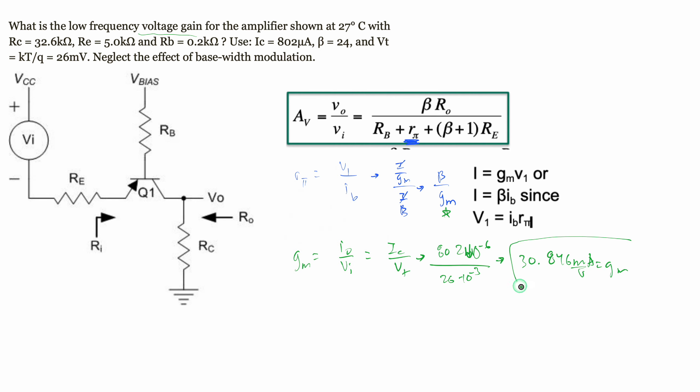We could take this and plug this back into this equation right here. We would just have 24 over our g_m, and this is going to give us our r_pi, which we would plug back into this equation.